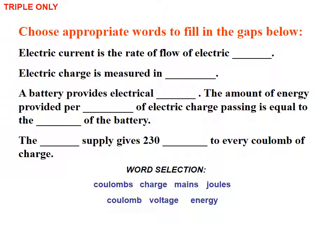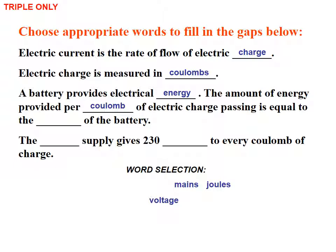As a nice summary: electric current is the rate of flow of electric charge. Electric charge is measured in coulombs. A battery provides electrical energy — the amount of energy provided per coulomb of electrical charge passing is equal to the voltage of the battery. The mains supply gives 230 volts to every coulomb of charge, combining what we've done today with mains electricity.